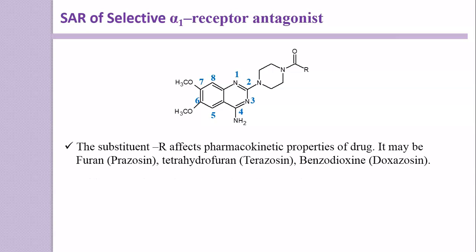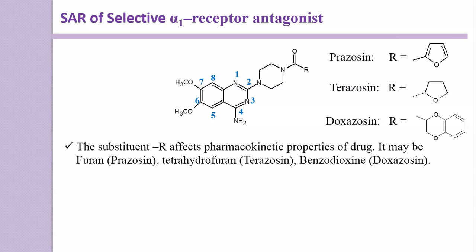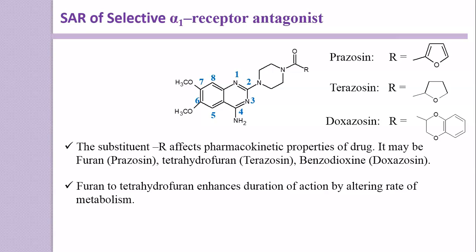The next point is: the substituent R affects the pharmacokinetic properties of the drug. You may also say that this acyl group has a profound effect on pharmacokinetic properties. For instance, if it has a furan ring, the compound formed is Prazosin; if it has a tetrahydrofuran ring, the compound formed is Terazosin; and if it has a benzodioxane ring, the compound formed is Doxazosin. The change from furan to tetrahydrofuran enhances the duration of action by altering the rate of metabolism.